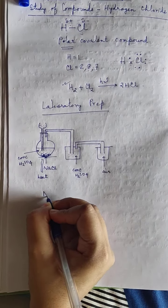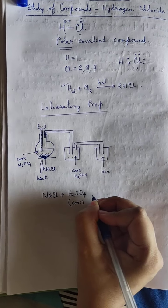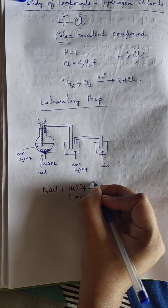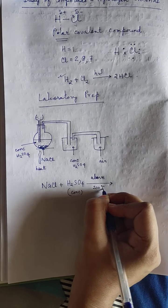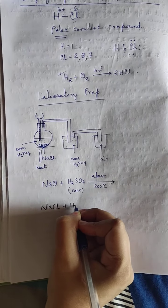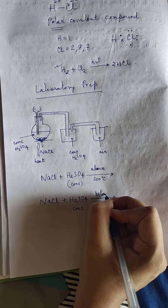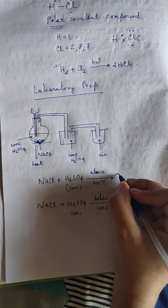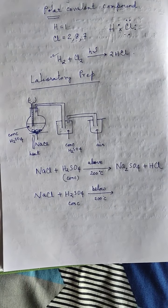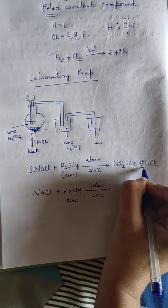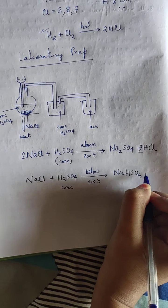The reactions involved are: NaCl + H₂SO₄ (concentrated). When heat is above 200°C, the products are Na₂SO₄ + HCl. When heat is below 200°C, the products are NaHSO₄ + HCl.